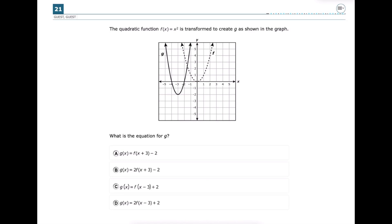This is number 21 from the 2024 Algebra 1 EOC. The quadratic function f(x) = x² is transformed to create g as shown in the graph. What is the equation for g?